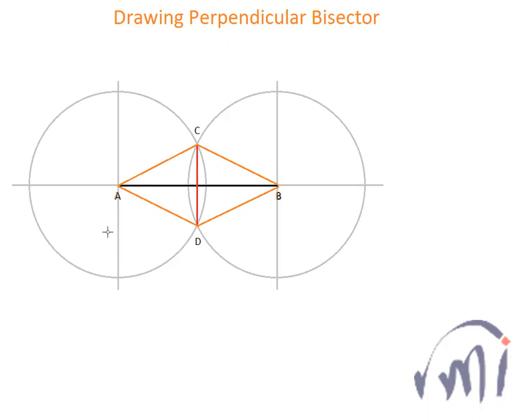And since both these circles with center A and B are of the same radius, that means AC is equal to CB is equal to BD is equal to AD.